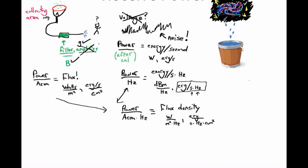You'll end up with things like something of order 10 to the minus 26 in MKS, or maybe 10 to the minus 23 in CGS. So in honor of the very first radio astronomer, Carl Jansky, radio astronomers decided to define a unit called a Jansky.